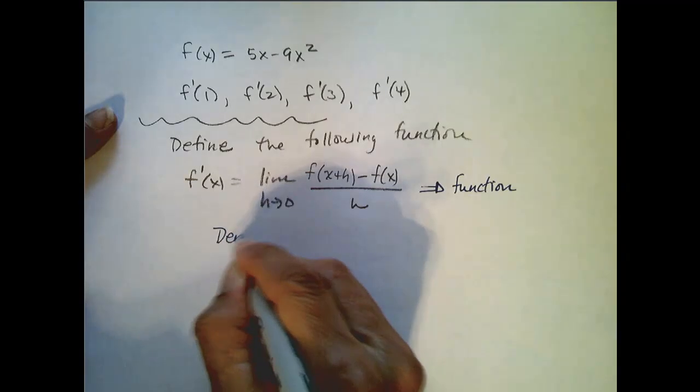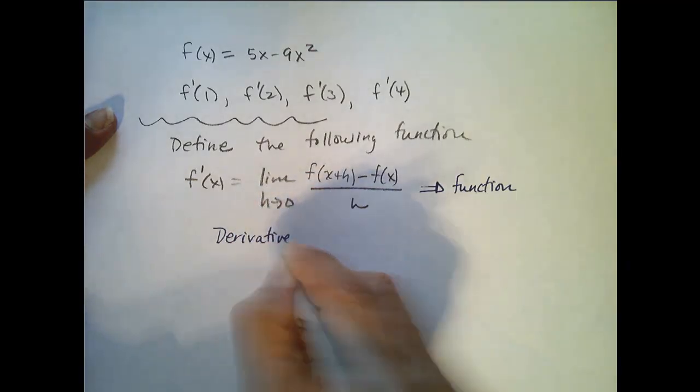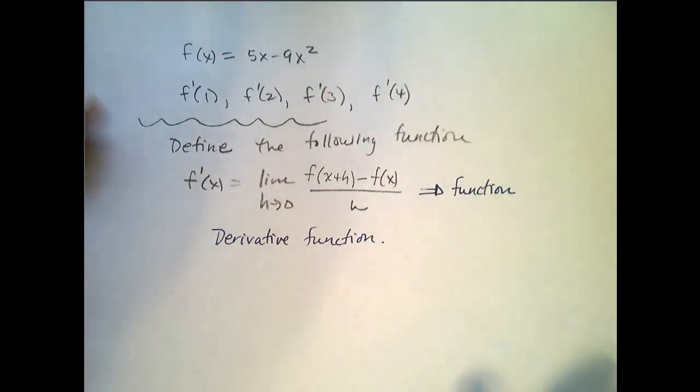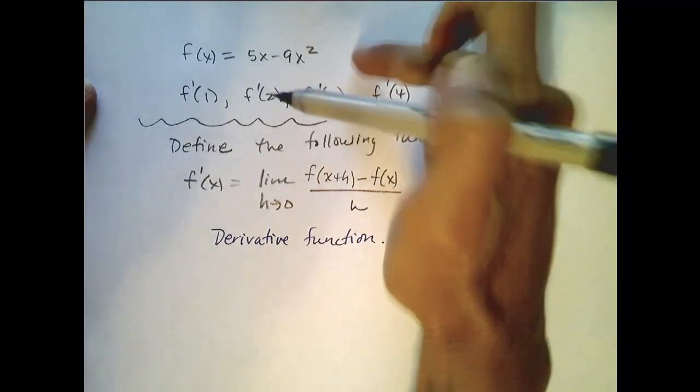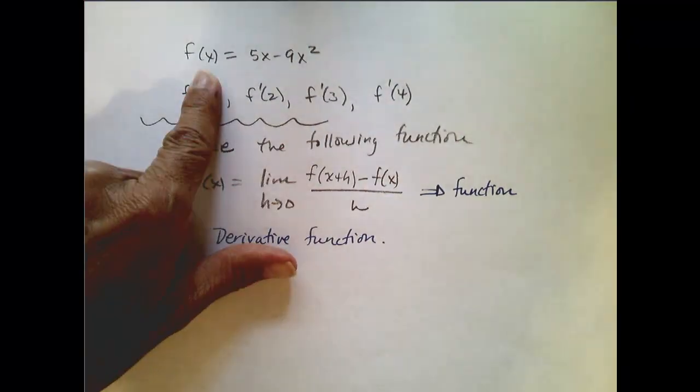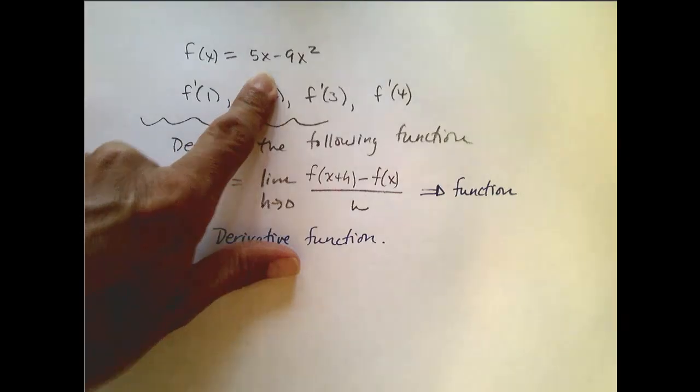And this is our derivative function. Now let's look at an example. Well, let's look at this example right here, the one that I have up here. Let's find the derivative function for f of x equals 5x minus 9x squared.